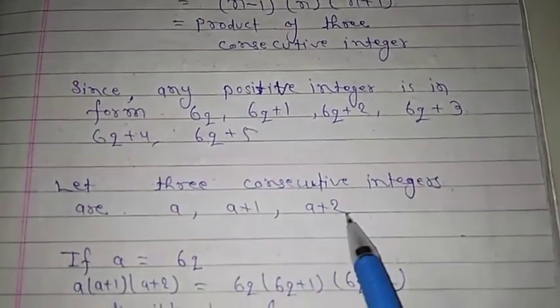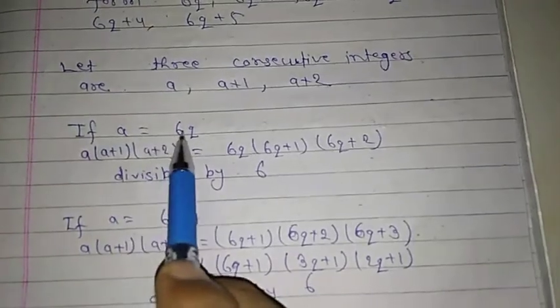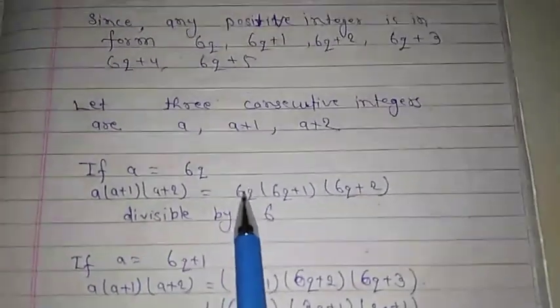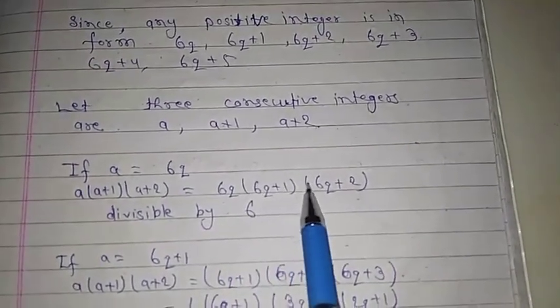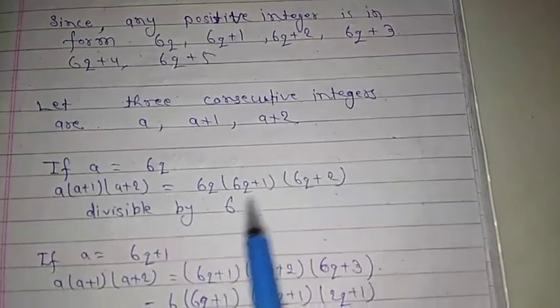If we take a = 6q, then a(a+1)(a+2) = 6q(6q+1)(6q+2), which is divisible by 6.